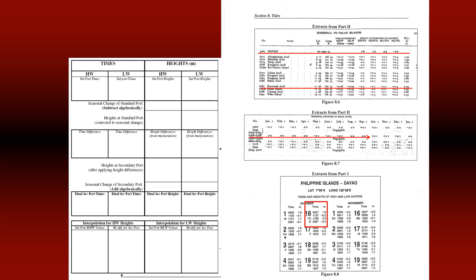For 16th of October 1997, the times and heights are given at the bottom right of the screen. I fill in the high water times first: 0527 and 1739. These are high waters because out of the four values those two are higher than the other two. Then I fill in the low water times of 1127 and 2357. For the heights: at 0527 the height is 1.8 m, at 1739 it is 2.0 m, at 1127 it is -0.2 m, and at 2357 it is -0.4 m.